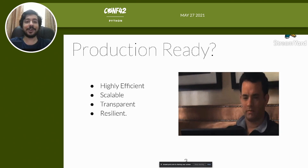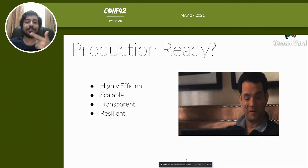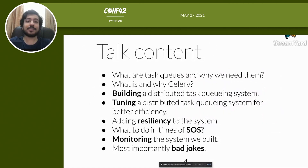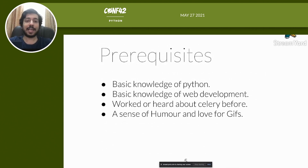Today we are going to see how to build a production-ready distributed task queue management system with Celery. By production-ready I mean highly efficient, scalable, transparent, and resilient. In this talk we are going to cover: what are task queues and why we need them, what is Celery and why use it, building a distributed task queuing system, tuning it for better efficiency, adding resiliency, what to do in emergencies, monitoring the system, and most importantly, bad jokes.